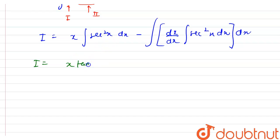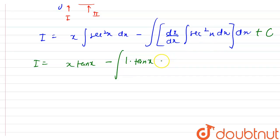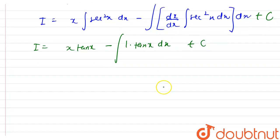So I equals x times the integration of sec²x, which is tan x, minus — and we add a constant C since it is an indefinite integral — and here we have the integral of the differentiation of x with respect to x, which is 1, times the integral of sec²x which is tan x, dx.